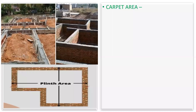Whatever area we get from the outer walls — these are the walls, and over the beam the walls are going to come later. This outer-to-outer area, drawn from one end to the other, all of this constitutes my plinth area. You can see here they have put a plinth beam, and outer to outer including the wall is called the plinth area.